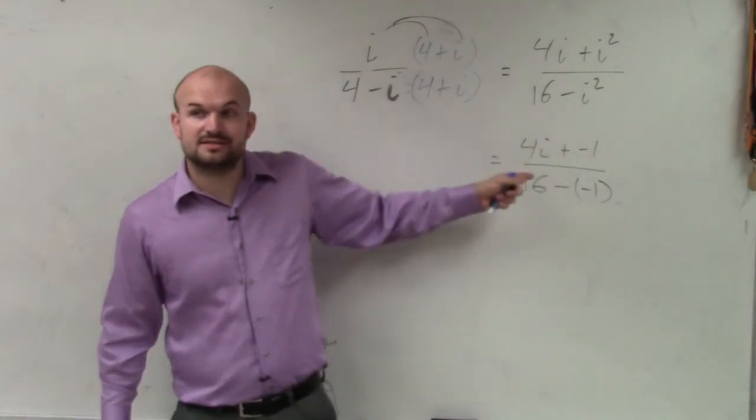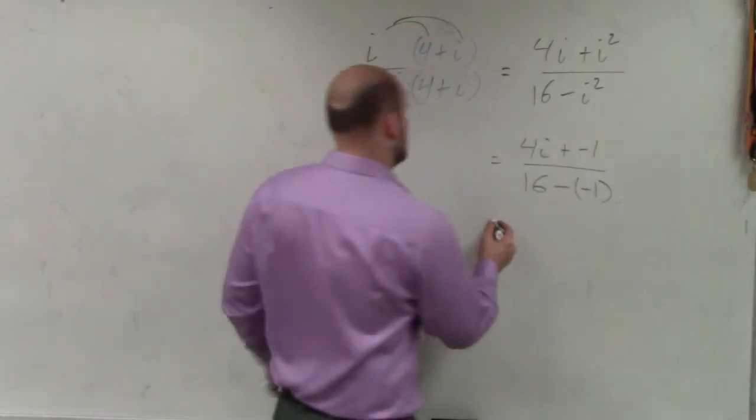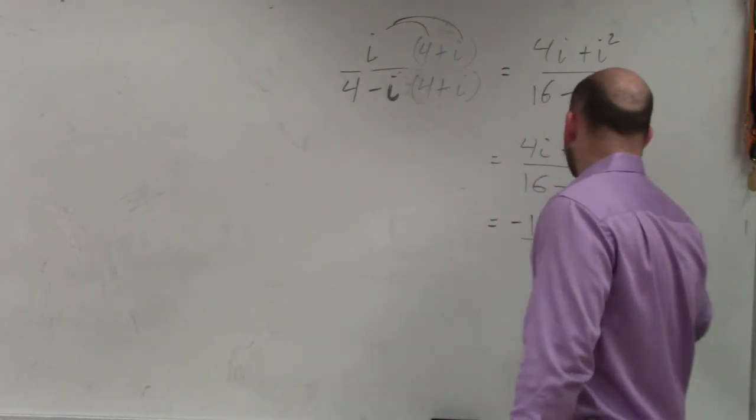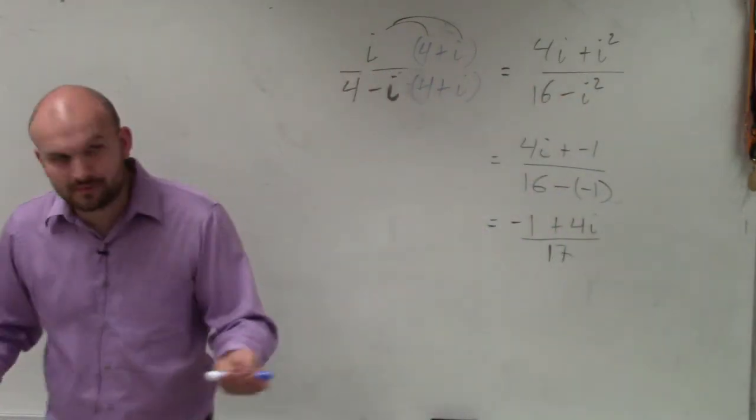Now I want to rewrite this in standard form. So I'm going to say this is negative 1 plus 4i all over positive 17, because 16 minus a negative is a double negative.